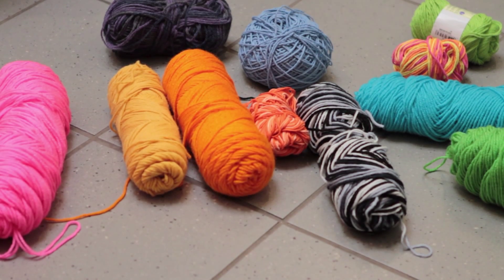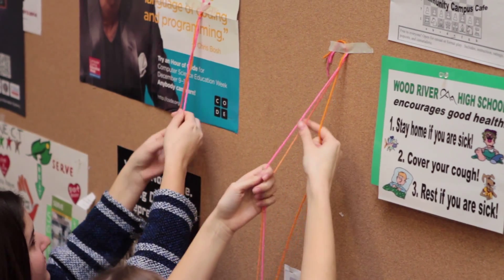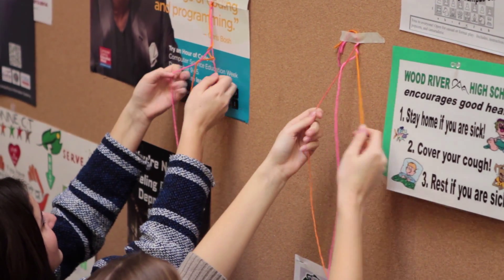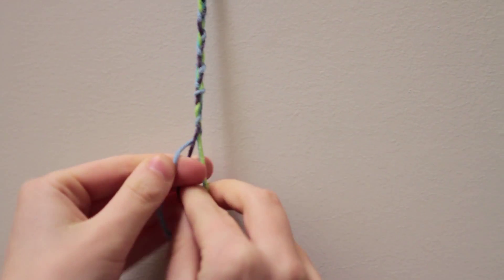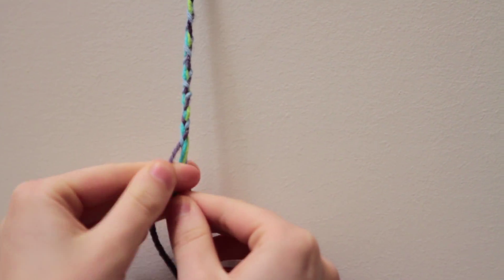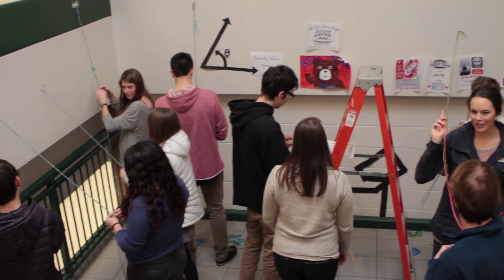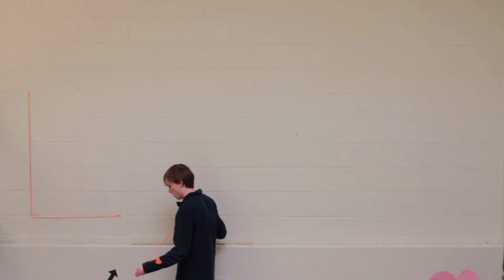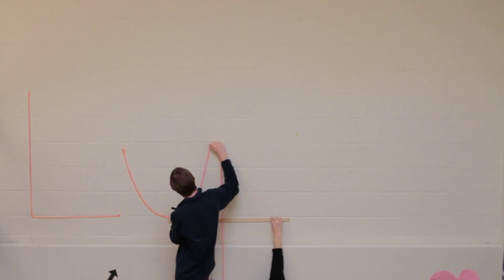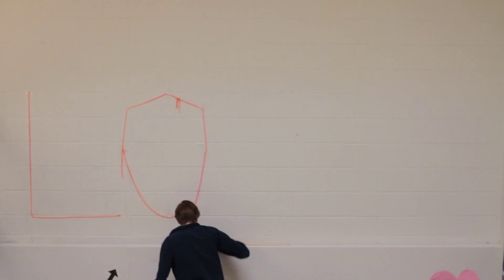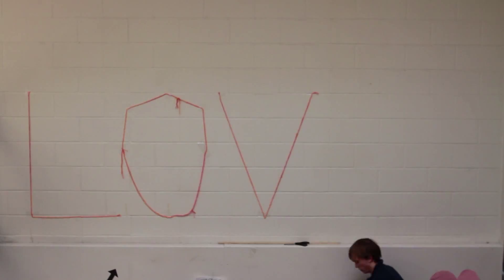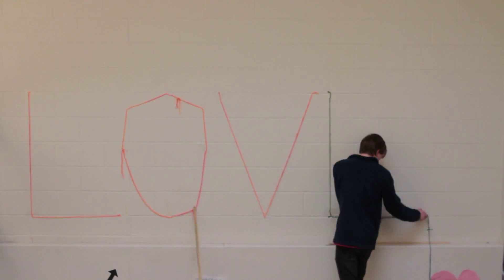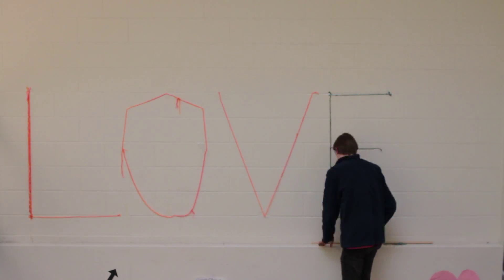Their materials were yarn, and they chose warm and cool colors again. Warm colors represented the students that felt accepted, and cool colors represented the students that did not feel accepted. They decided percentage-wise roughly what that would be, and they wanted to create the installation so that it represented a word. They used the word 'love' and wove together yarn showing roughly the percentage of students that felt loved and accepted and those that didn't.